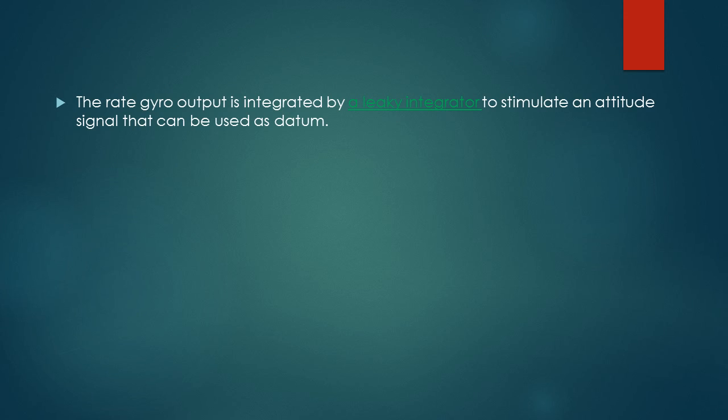So the rate gyro output is integrated by a leaky integrator to simulate an attitude signal or movement signal, that is your pitch and roll, that can be used as datum.